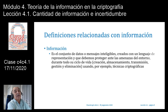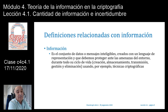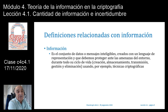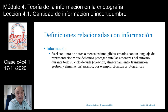Comencemos con las definiciones. Primero que nada, tenemos que definir información. Habrá seguramente muchas definiciones, pero aquí vamos a dar una más o menos personal: es el conjunto de datos o mensajes inteligibles creados con un lenguaje de representación y que debemos proteger ante las amenazas del entorno durante todo su ciclo de vida — durante la creación, el almacenamiento, la transmisión, la gestión y la eliminación de información, usando, por ejemplo, técnicas criptográficas.